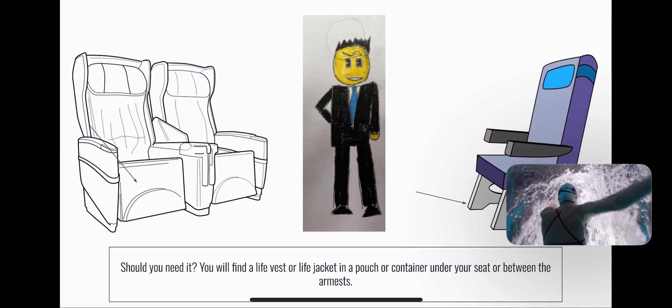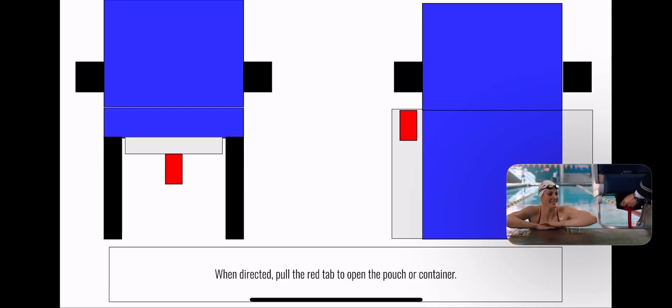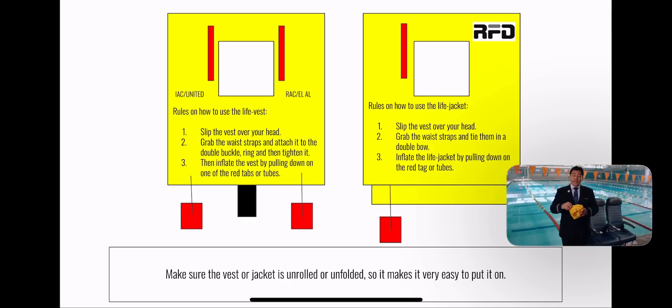Should you need it, you'll find a life vest equipped with a water-activated light under or near your seat. When directed, pull the tab to remove the pouch, tear open the pouch, and remove and unfold the vest.